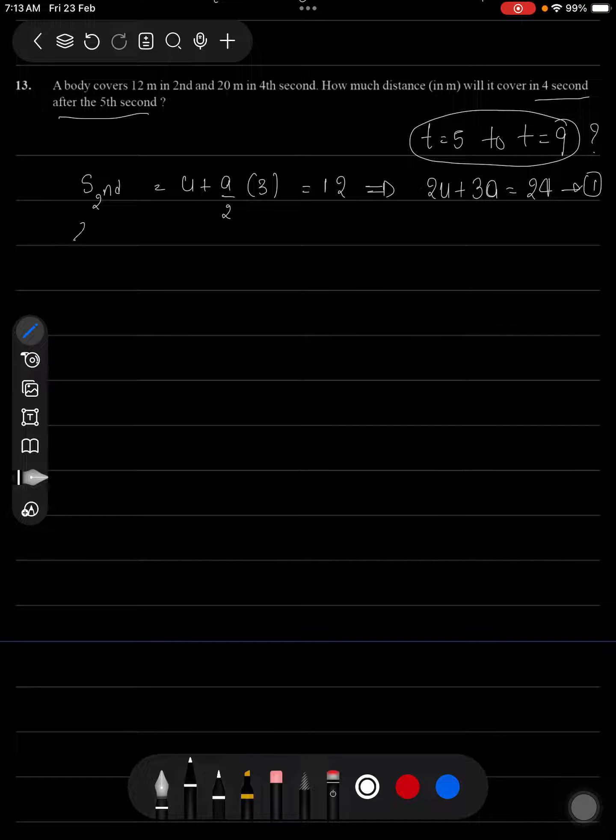Then let us go with distance traveled in the 4th second which will be u plus a by 2 into 2 into 4 minus 1, 7 which is given as 40 meters. So this can be written as 2u plus 7a is equal to 40.